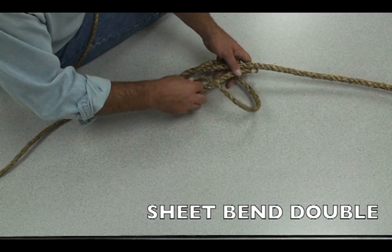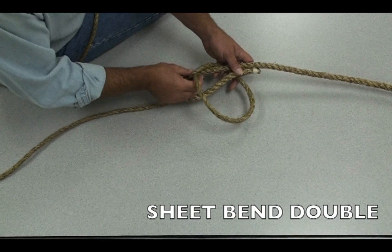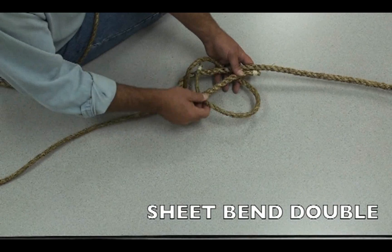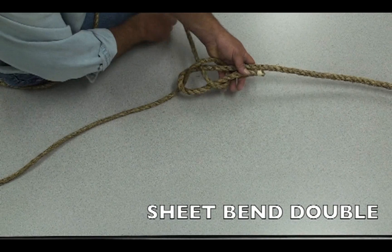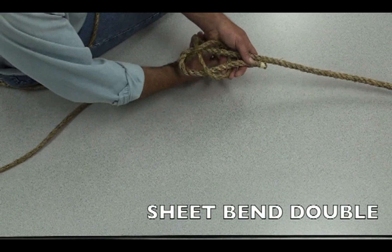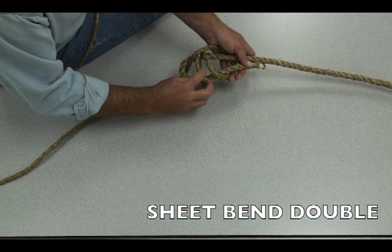Same thing as before. Instead of going through like the square knot, you go underneath. And you go underneath twice for a double.